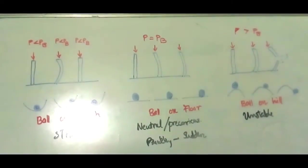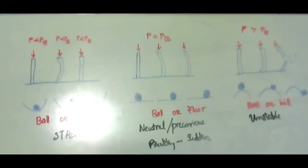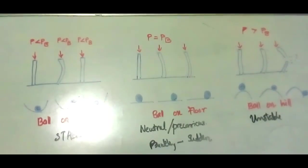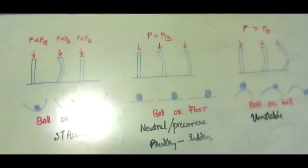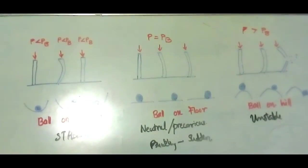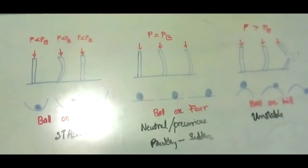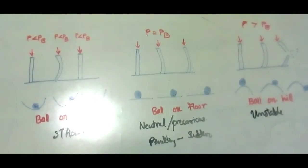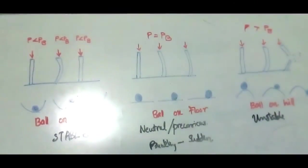So finding this buckling load is our concern. For finding the critical load or buckling load — or the minimum axial compressive load for which a column will experience lateral deflection — Euler has suggested a method.